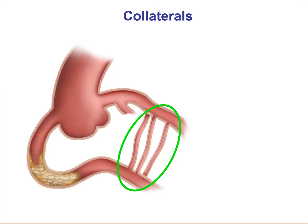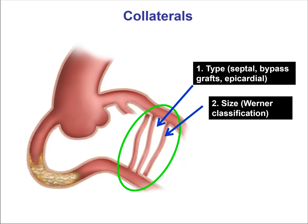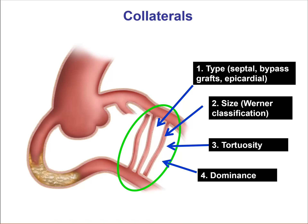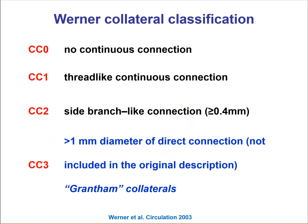Finally, we look at the collateral vessels: whether they are septals, bypass grafts, or epicardials; the size using the Werner classification; whether they are straight or tortuous; what is the dominance — meaning the dominant source of blood supply to the occluded segment. This is very important because if there's a single collateral feeding all the distal territory and that becomes occluded during crossing attempts, severe ischemia and/or arrhythmias may occur. Finally, we look at where the collaterals touch down the distal vessel — the angle and location of entry — and we want the entry to be further away from the distal cap, so there's enough room for equipment to provide additional support during crossing attempts.